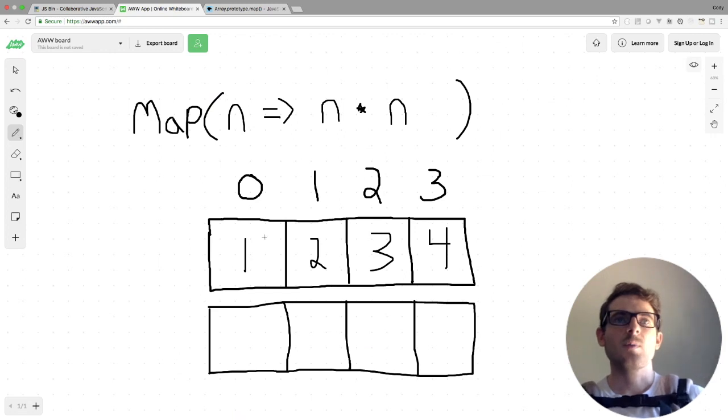So now if we were to step through the map function over this original array and look at the outputs, let's do that. The first one, we're going to look at one here. One's going to come up here, one times one is equal to one, so this is going to return one. So our new array is going to have the same length as the old one, and the first element is going to be one.